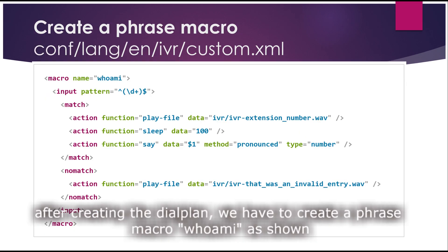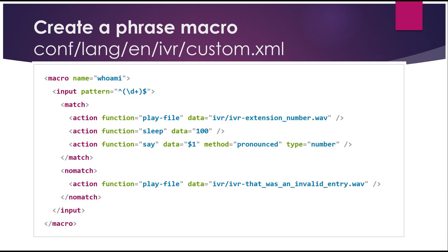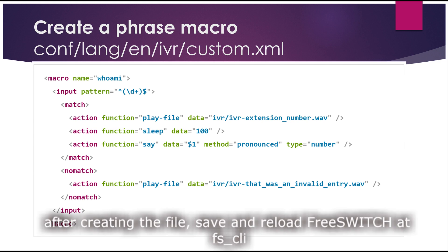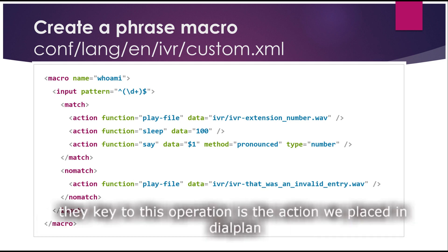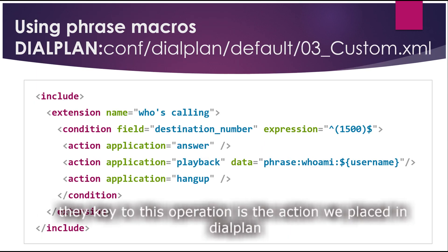After creating that dial plan, you go ahead and create the phrase macro itself. I'm going to create the phrase macro in a custom.xml file in the following location: conf/lang/ivr. When I create that file, I will then go ahead and reload XML on the FreeSWITCH console.